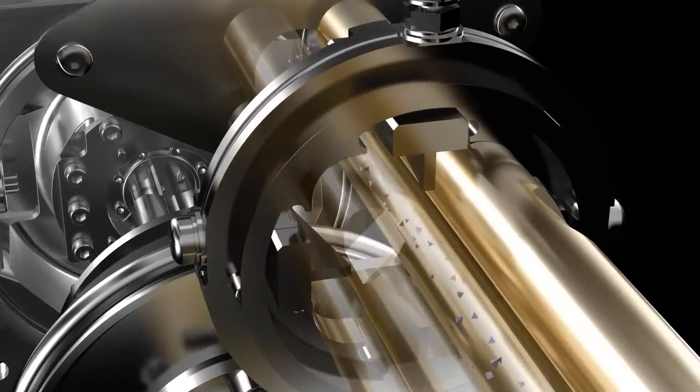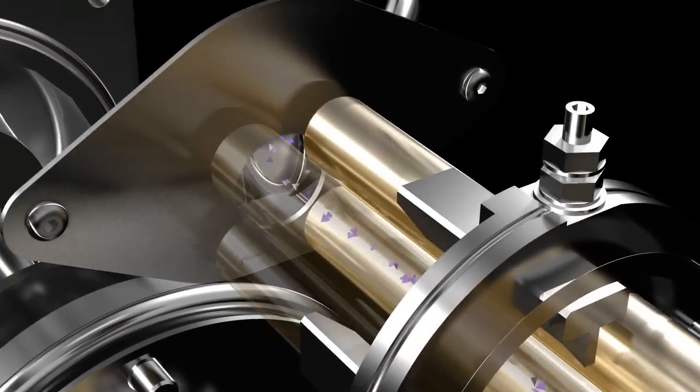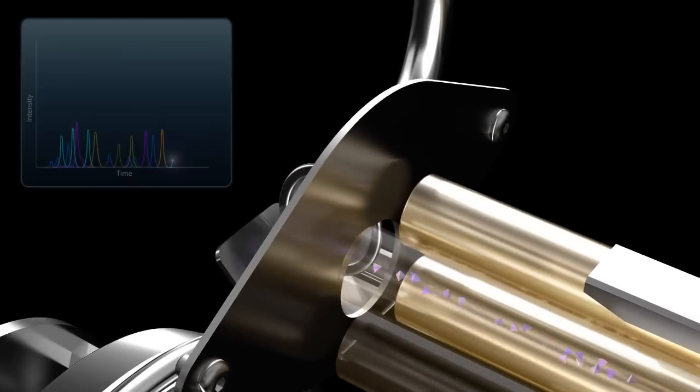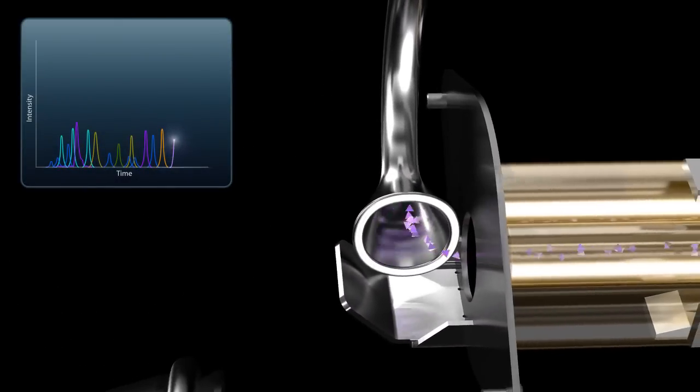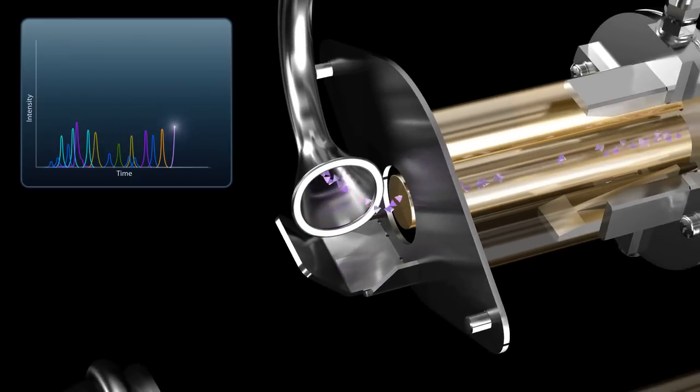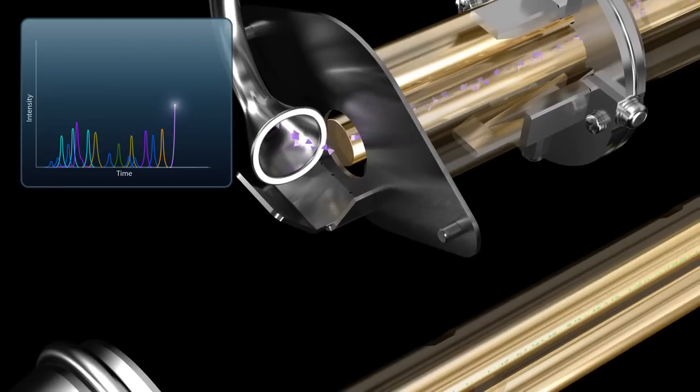When the QTRAP 5500 functions in triple quadrupole mode, Q3 transmits specific product ions to the detector to generate gold-standard MRM quantitation, and the new accurate detector uses pulse counting to improve accuracy and precision relative to traditional analog-based detectors.